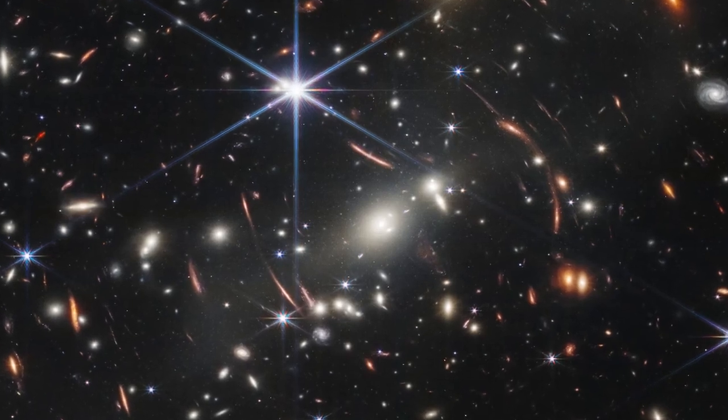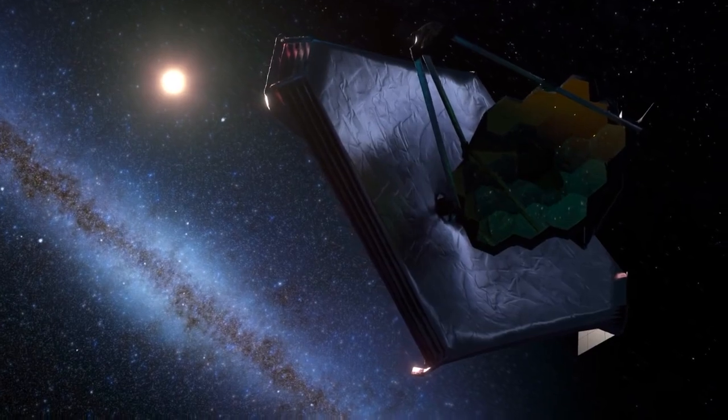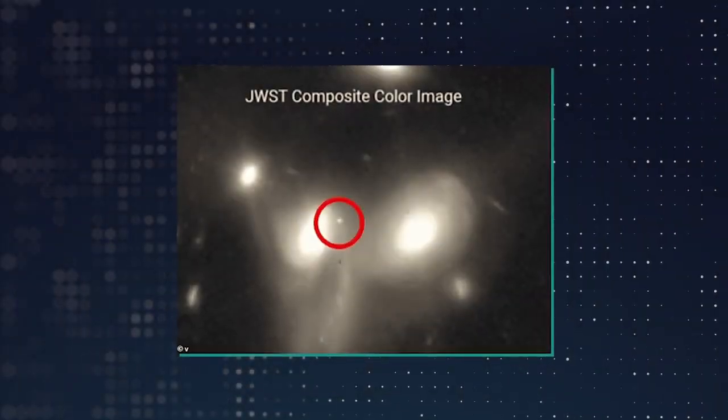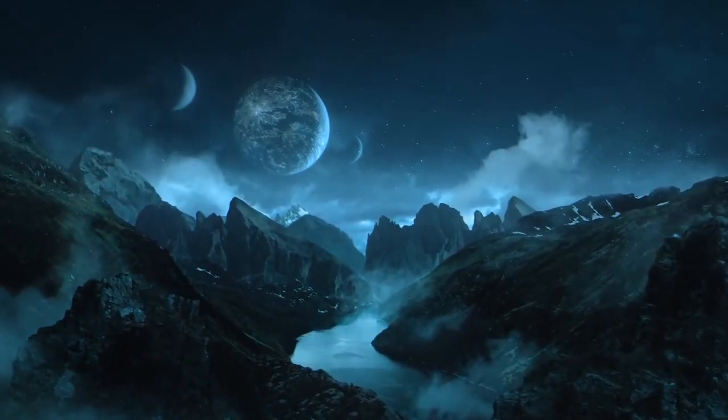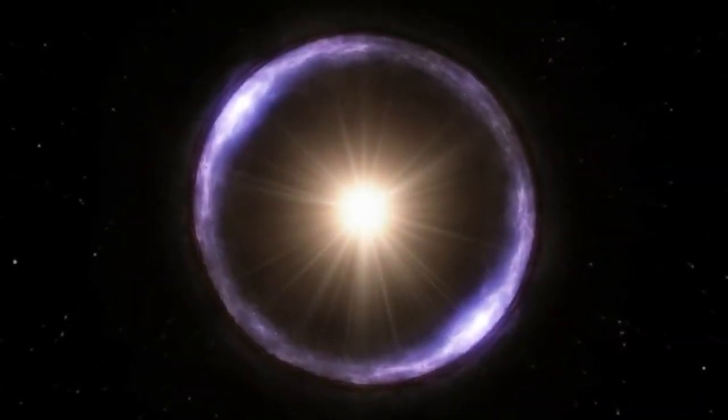NASA released the first colored images of our universe from James Webb in July. Since then, the space telescope has captured indication of a supernova, carbon dioxide in an exoplanet's atmosphere, and now James Webb has captured an image of a beautiful Einstein ring.